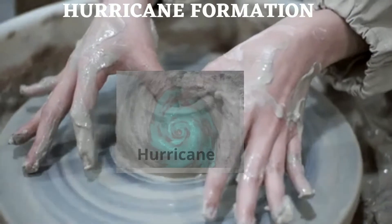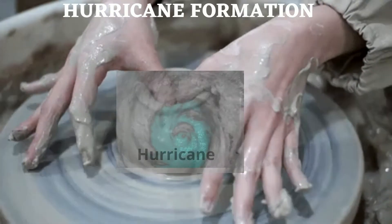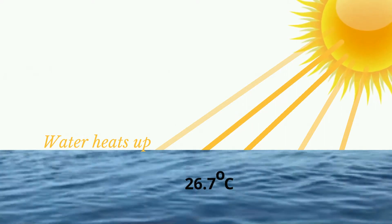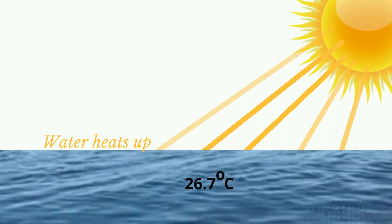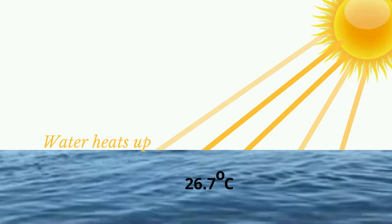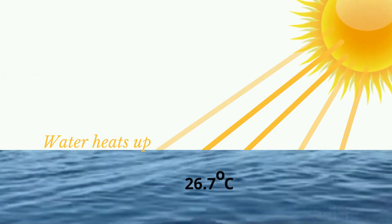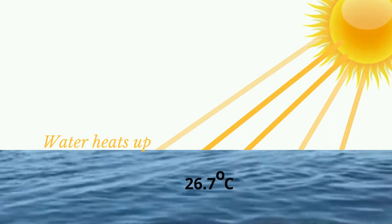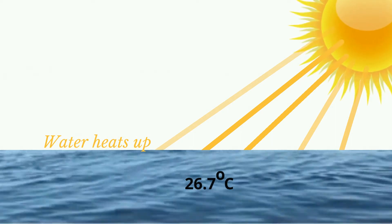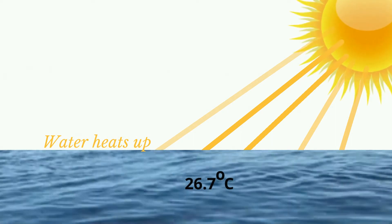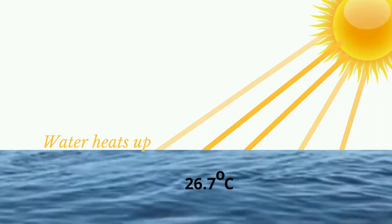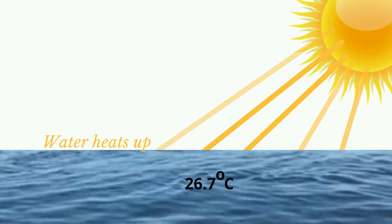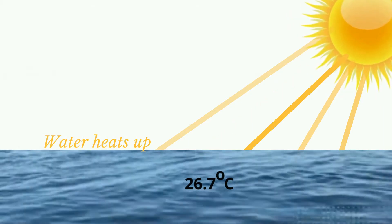Hurricanes occur in the summer when the sea surface is heated by the sun. For this to be effective, the sea must be heated to a certain depth, which means that hurricanes are formed offshore and away from the coast.